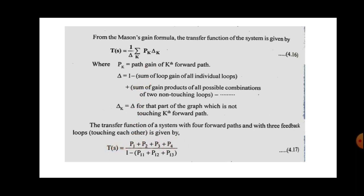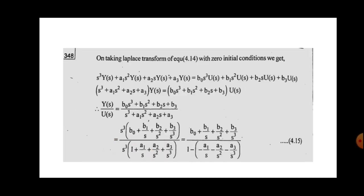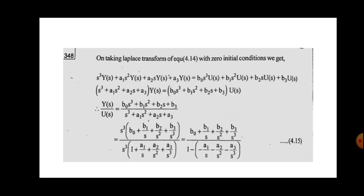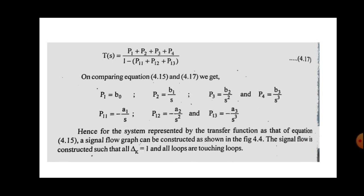We compare this equation with the previous transfer function. At the numerator side, equating the forward path gains: p₁ = b₀, p₂ = b₁/s, p₃ = b₂/s², p₄ = b₃/s³. This means p₁ has no integrator, p₂ has one integrator, p₃ has two integrators, and p₄ has three integrators.